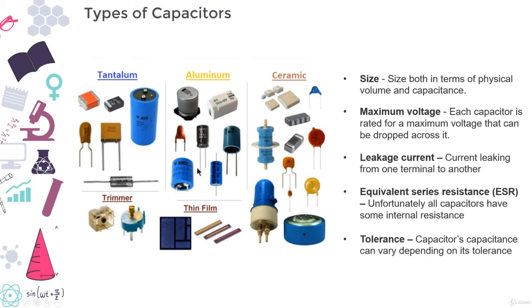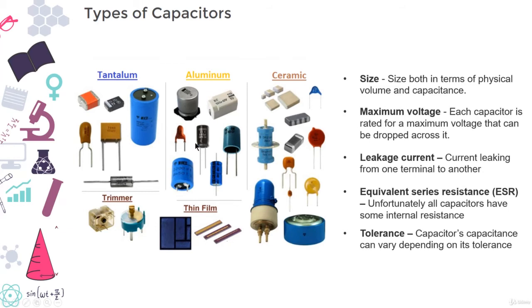The last thing to consider is the tolerance. Capacitors also can be made to have an exact precise capacitance. Each capacitor will be rated for their nominal capacitance, but depending on the type, the exact value might vary anywhere from plus minus 1% to plus minus 20% of the desired value.